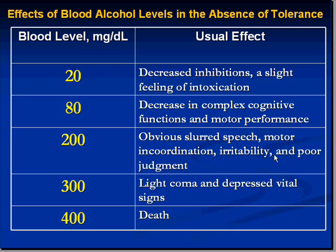At around 160 mg/dL, you also have irritability and very poor judgment. Up at about 300 mg/dL, you're in very serious trouble — we're talking coma, usually reversible. The lethal level of blood alcohol is approximately 400 milligrams per dL. At a serum blood alcohol level of 400 mg/dL, there's a good chance you're dead.